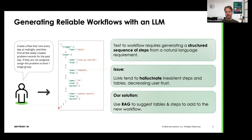One of the main issues with just letting the LLM do everything is that it tends to hallucinate steps or tables that might not be available in a given customer instance, or things that are custom or obscure. LLMs just tend to make up stuff. The solution we came up with is to use Retrieval Augmented Generation to suggest tables and steps for the LLM to use when generating a new workflow.